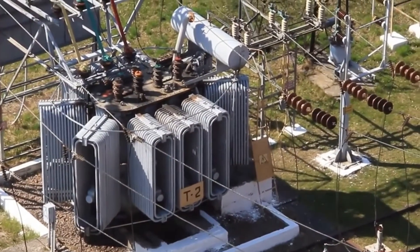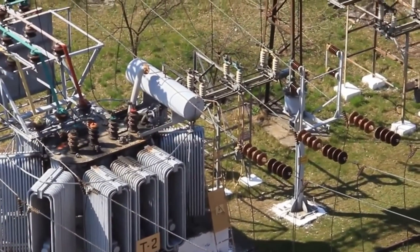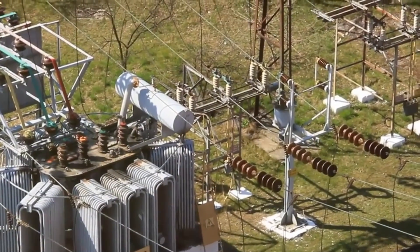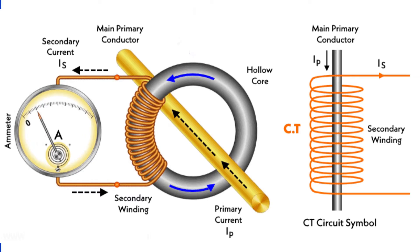The CT differs significantly from a power transformer, which operates on mutual inductance, as the CT's primary current is dependent on the load current. This characteristic ensures that a CT's primary current remains consistent, irrespective of whether its secondary is connected with a burden or not. This critical information helps us understand the risks associated with an open secondary winding in a CT.